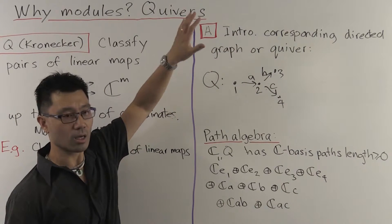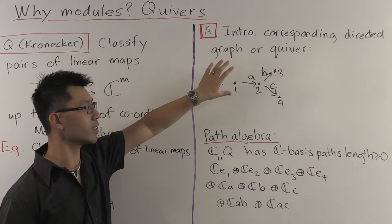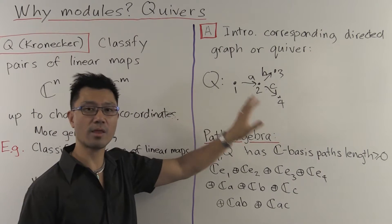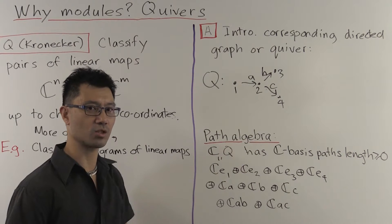Now the point is that this graph gives you an algebra, or a ring, and it's called the path algebra. And this path algebra is very important in the representation theory of finite dimensional algebras.